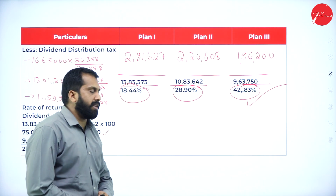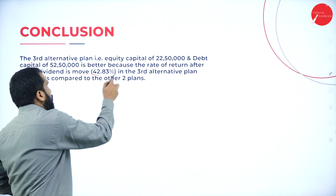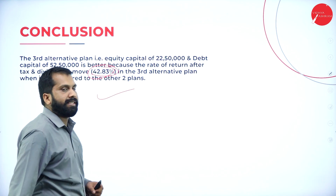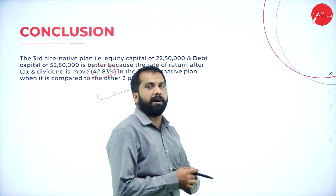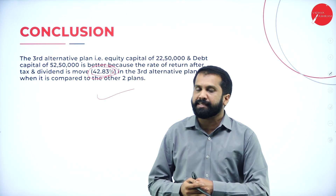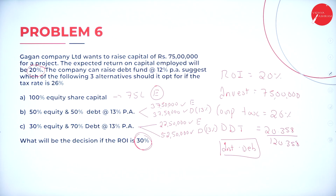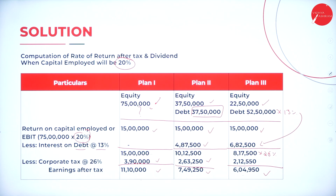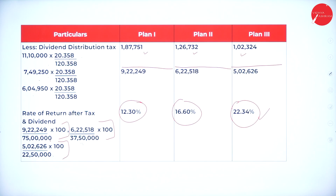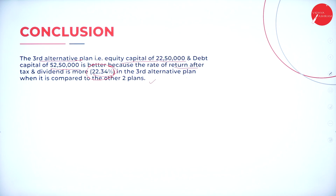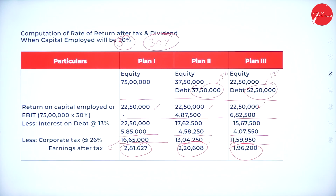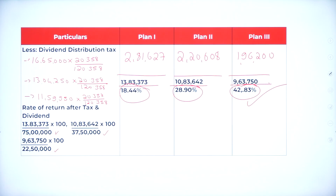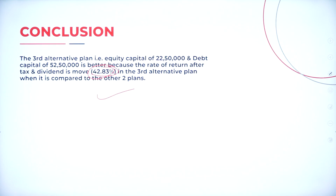Hope you are clear. Your conclusion will be: 42.83 — Option 3 is considered. Now I will go back to all your previous slides. Please take a screenshot. Problem number 6 — solution part, your solution, conclusion. Your solution of Part B — if it is 30%, solution, conclusion.